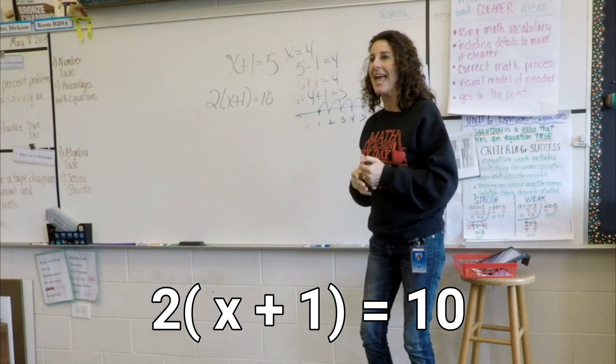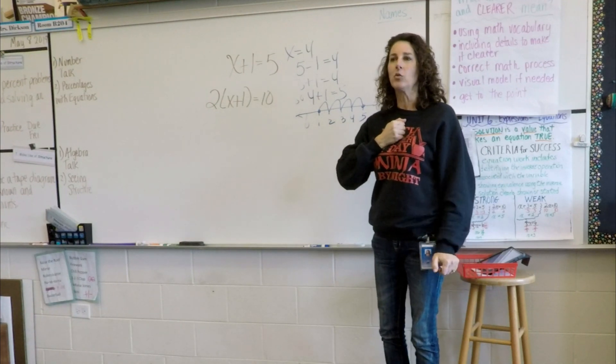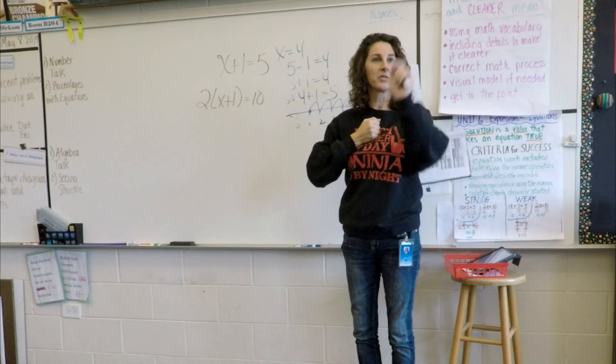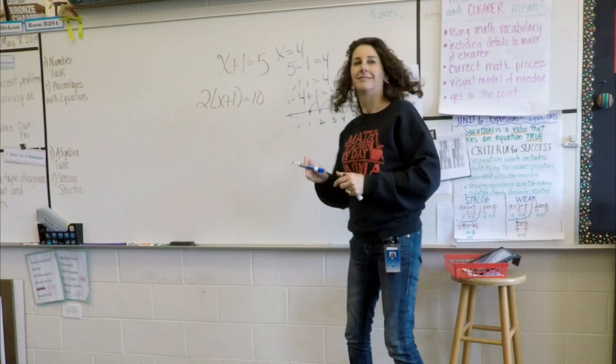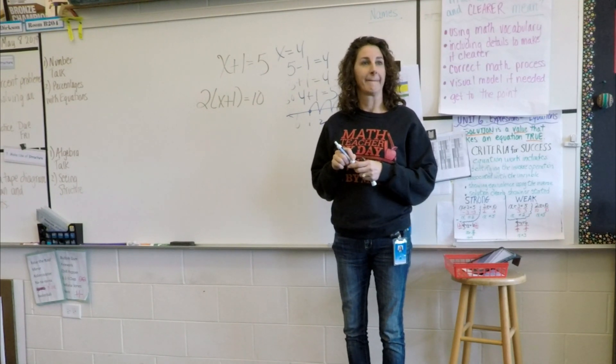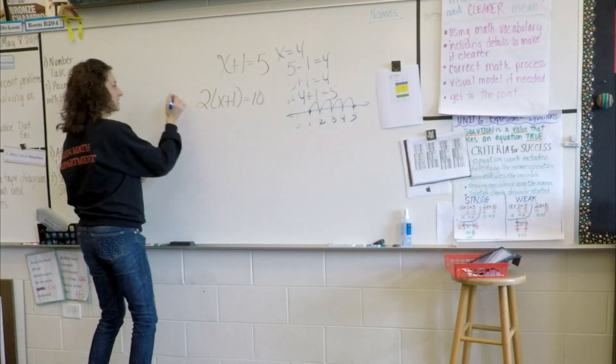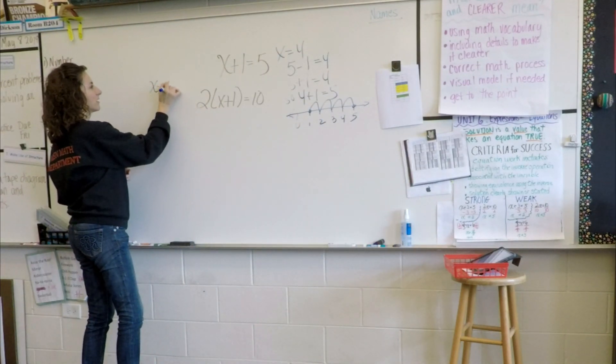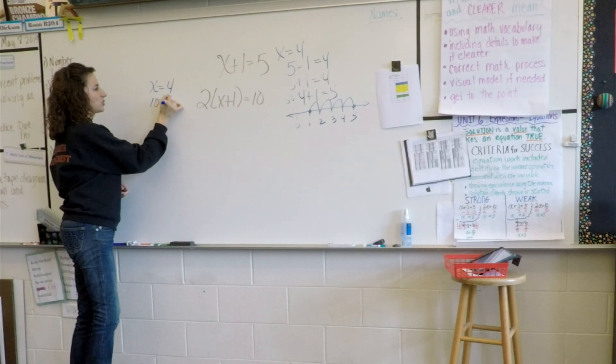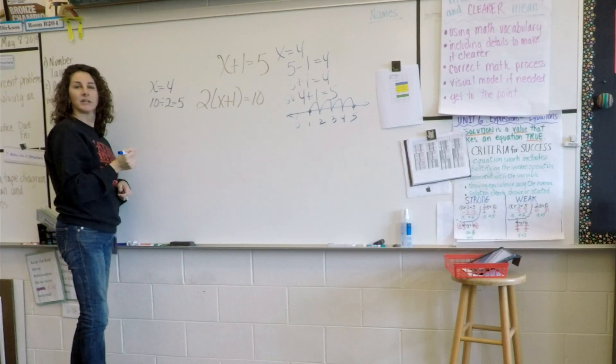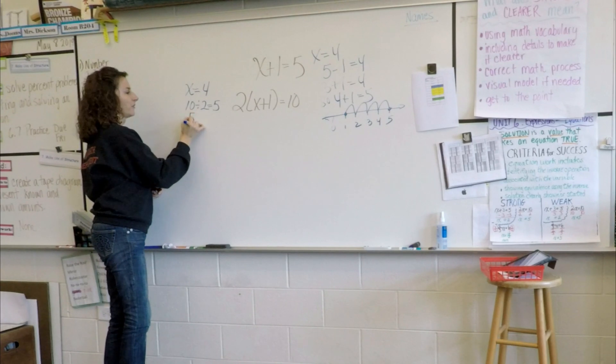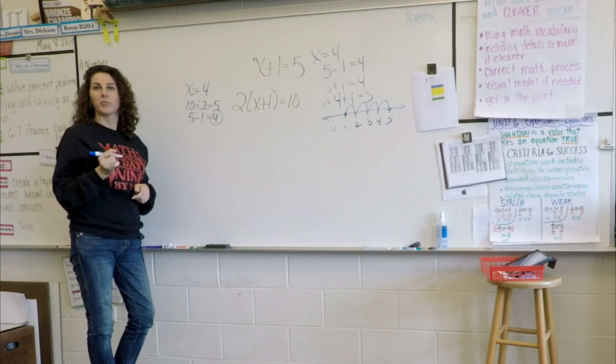2 times the quantity x plus 1 equals 10. Fist to chest. Everyone start off the same. I'm going to start with Alexandra. What is the solution that would make this equation true? I'm going to put it over this way. x equals 4. Why? So I think that 10 divided by 2 equals 5. And 5 minus 1 is 4, and that was your ending point. Excellent.